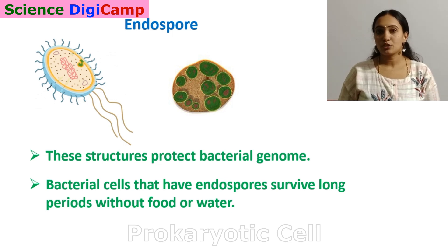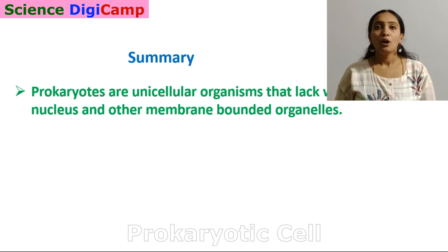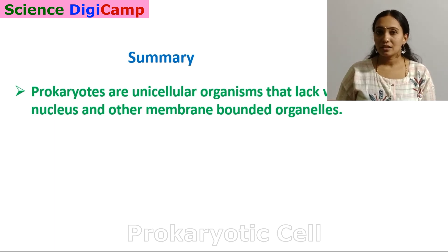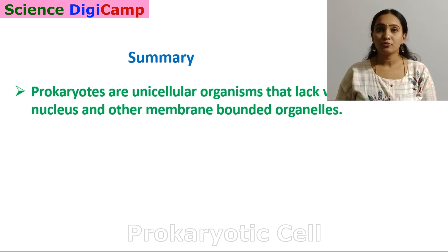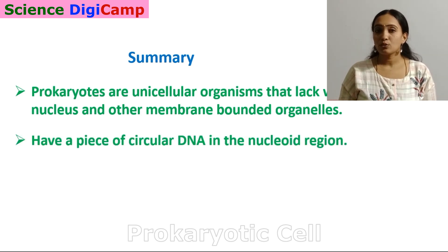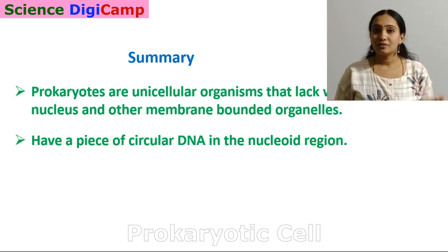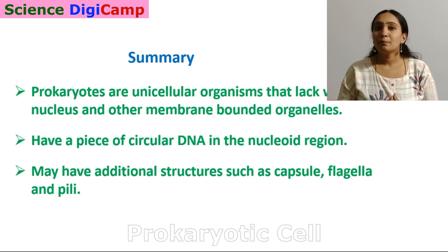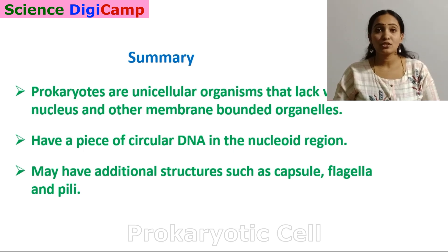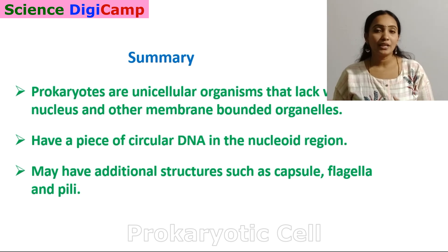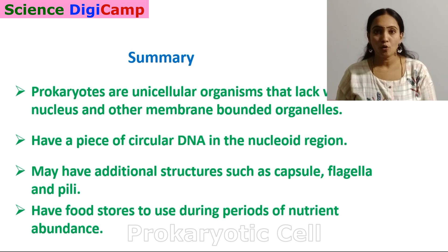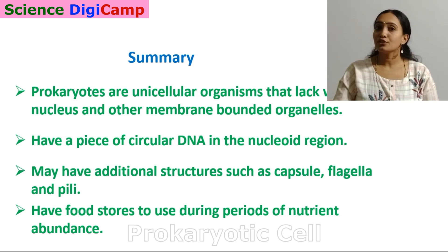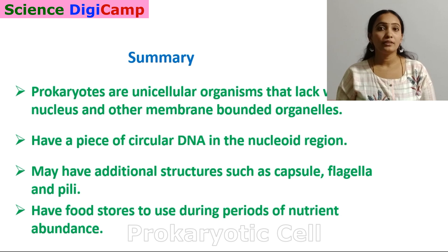Now for a summary: Prokaryotes are unicellular organisms that lack a nucleus and other membrane-bounded organelles, but have a piece of circular DNA present in the nucleoid region. Certain bacteria have special additional structures like capsule, fimbriae, and flagella. Bacteria also have inclusion bodies — food stores — where food is stored and used whenever needed, especially during periods of nutrient depletion.